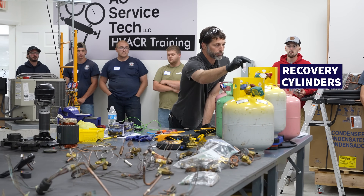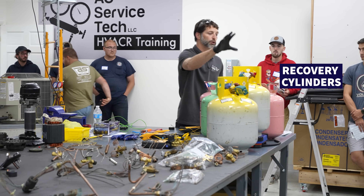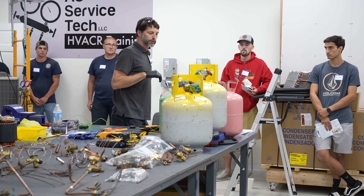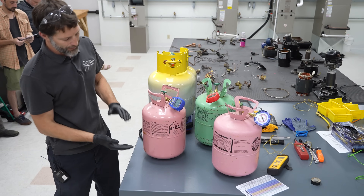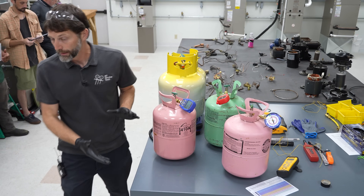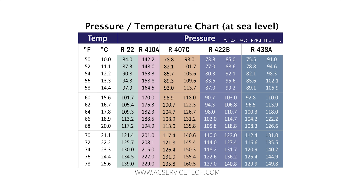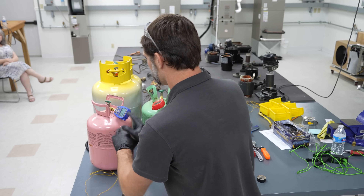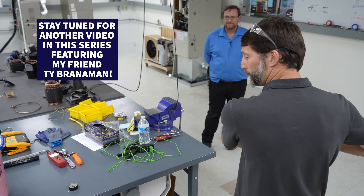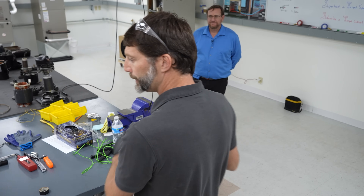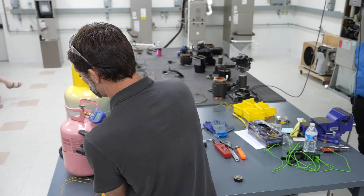These right here are reusable recovery cylinders. What I want to go over is on your PT chart: anytime you have both liquid and vapor in a tank, it's saturated. If we know the temperature of the refrigerant in the tank, we'll know the pressure. Vice versa, if we know the pressure, we'll know the temperature. Right here this is static — the same thing as a system that's off and equalized where pressures are completely the same and you have both liquid and vapor.